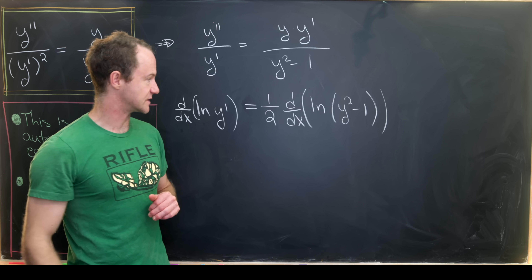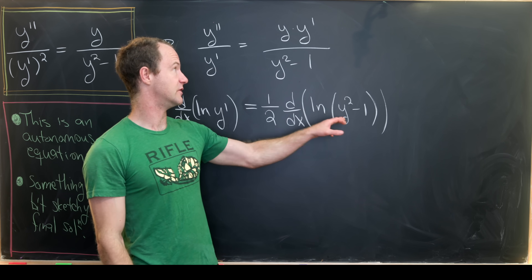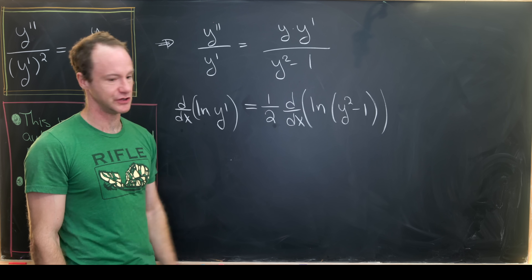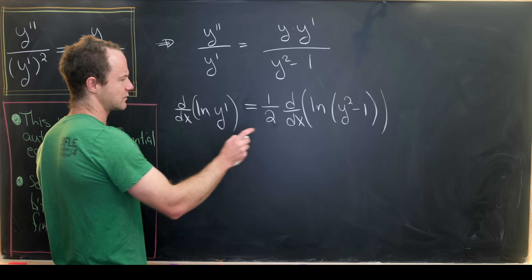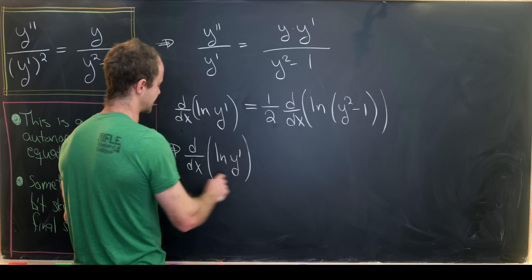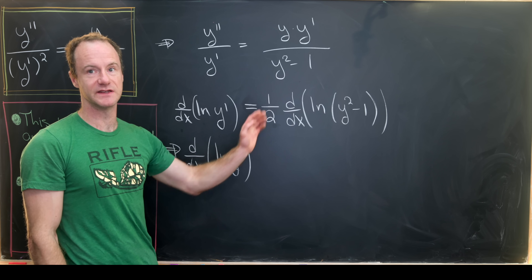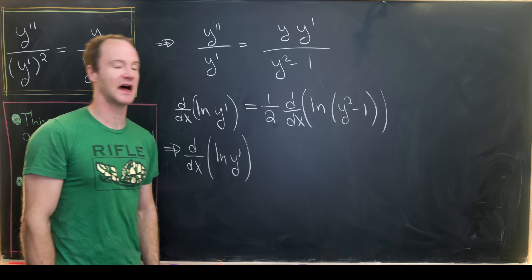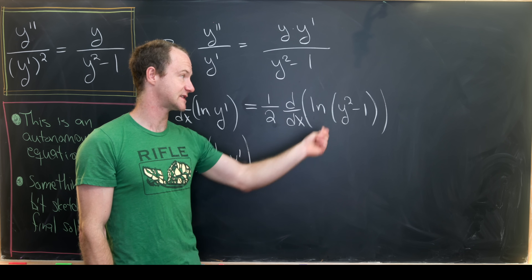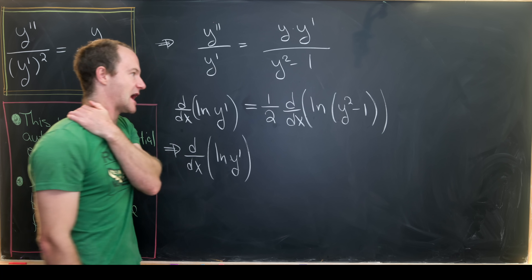Taking the derivative of the natural log will send y squared minus 1 downstairs, and the derivative of the inside gives 2y y prime by the chain rule, and the half cancels that 2. Now I'm going to rewrite this using the fact that the derivative operator is linear — that means I can bring the one-half inside the derivative operator, and then inside the natural log it becomes a one-half exponent of y squared minus 1, which is a square root.